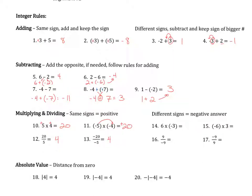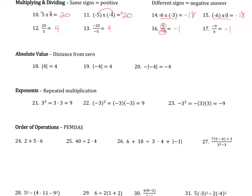When they have different signs — when the two things you're multiplying have different signs — the answer will be negative. In examples 14 and 15, one number is positive and one is negative. If they have opposite signs, they multiply to a negative answer. It doesn't matter whether the negative is in the top or bottom when dividing — 9 divided by negative 9 is negative 1, and negative 9 divided by positive 9 is still negative 1.